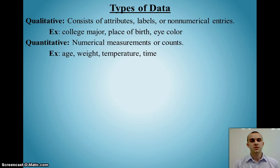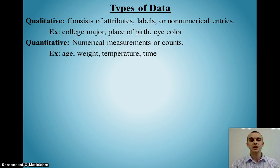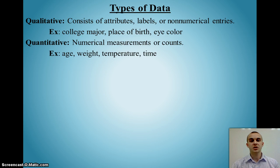Whereas quantitative data is numerical measurements or counts, such as someone's age, their weight, temperature, time, speed — things that actually have measurements to them.